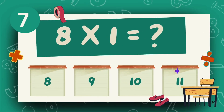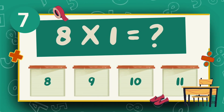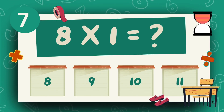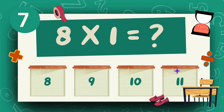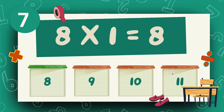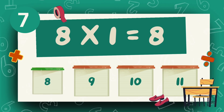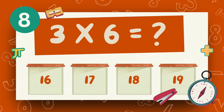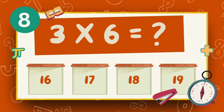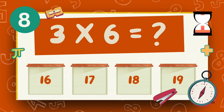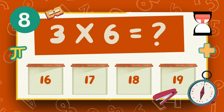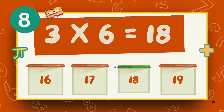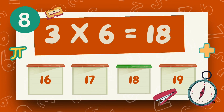What is 8 multiply 1? The answer is 8. What is 3 multiply 6? The answer is 18.